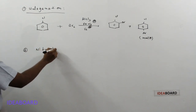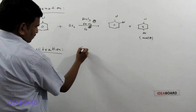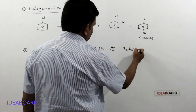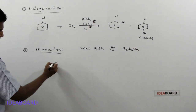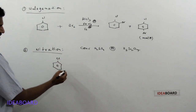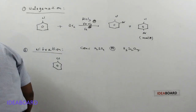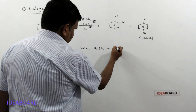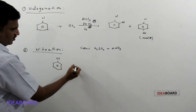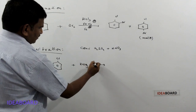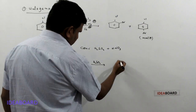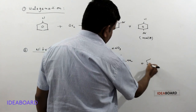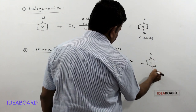The second one is nitration. In the nitration process, vigorous conditions are used. The reagent used is a mixture of concentrated H₂SO₄ and HNO₃ — that is the nitrating mixture. When chlorobenzene reacts with concentrated HNO₃ and H₂SO₄ mixture, it gives ortho-chloronitrobenzene or para-chloronitrobenzene, with para-chloronitrobenzene being the major product.